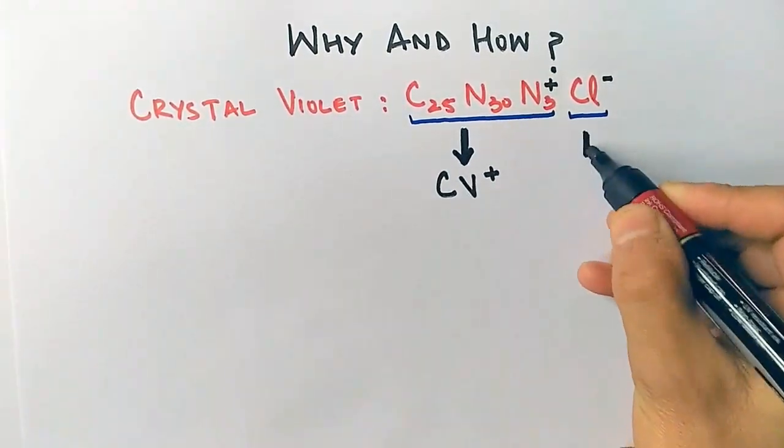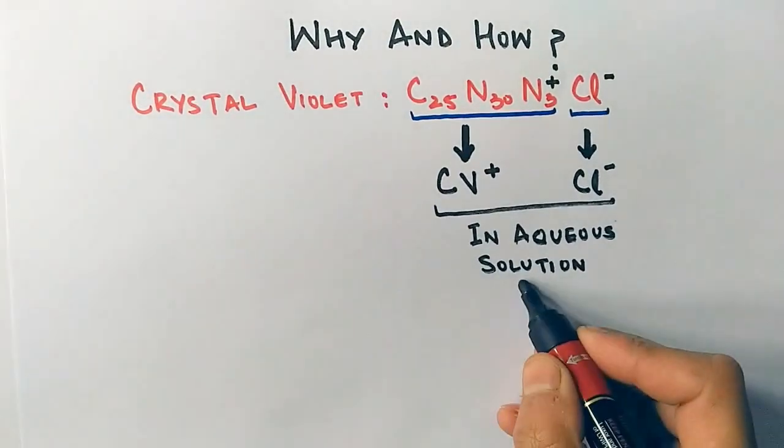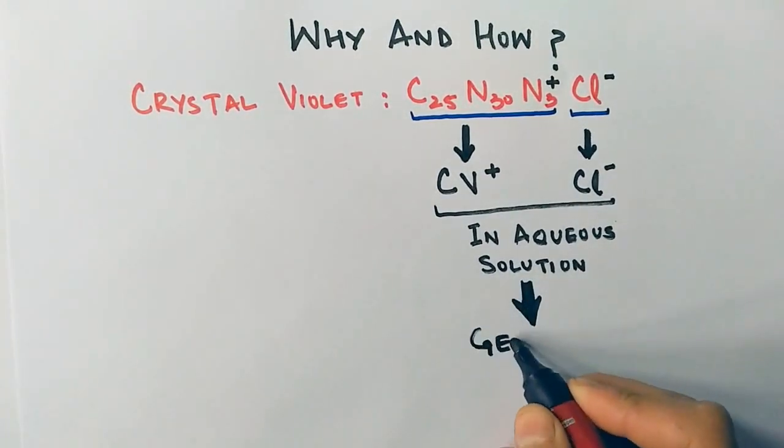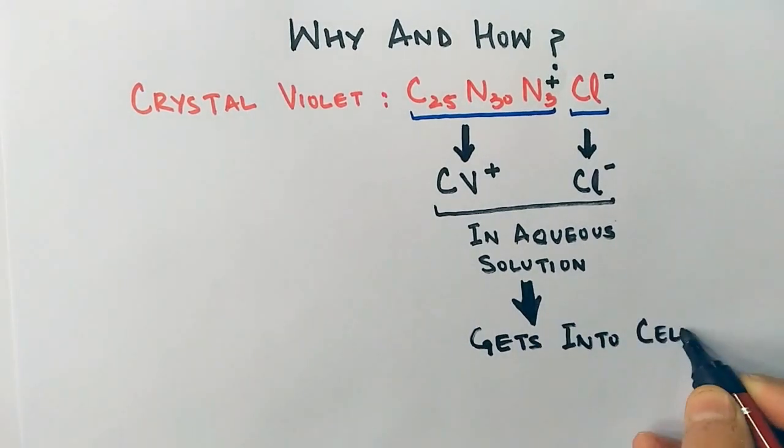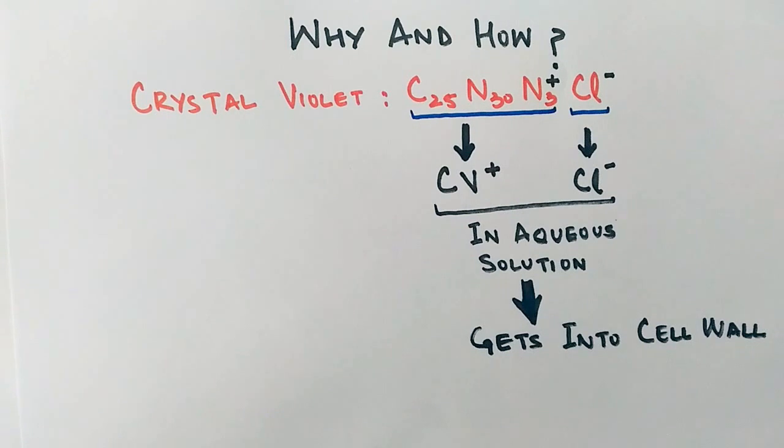It dissociates into two charged species: CV positive and Cl negative. These two charged species get trapped into the cell wall of both gram positive and gram negative bacteria because they are not yet differentiated, so they get trapped into the cell wall of both types of bacteria.